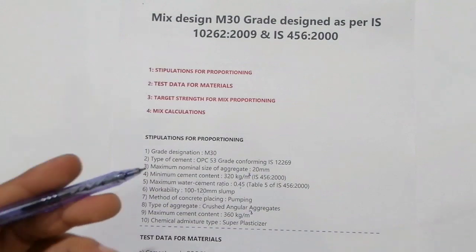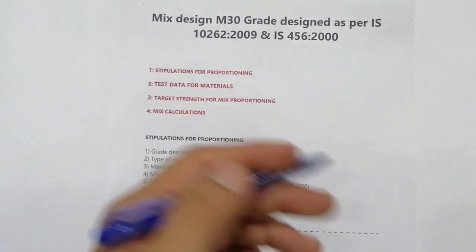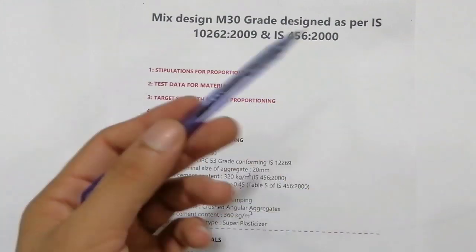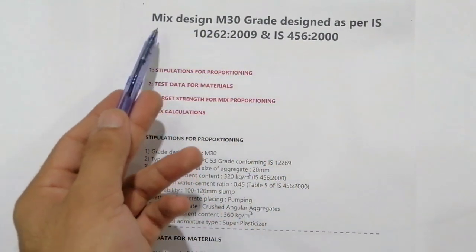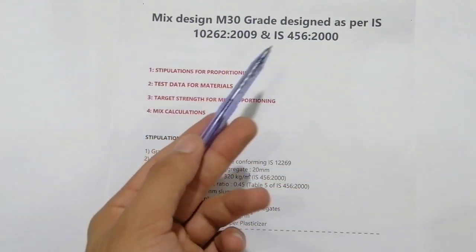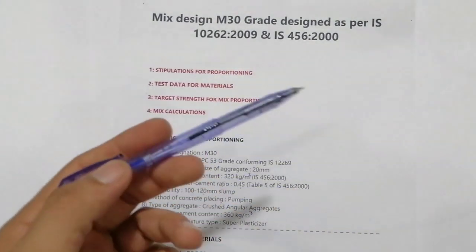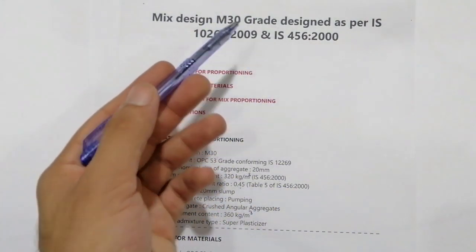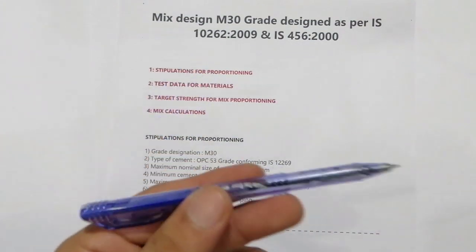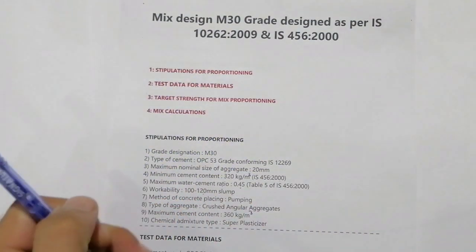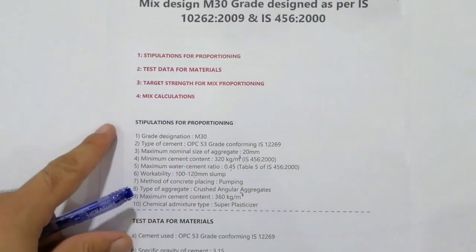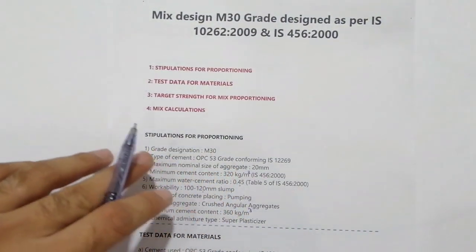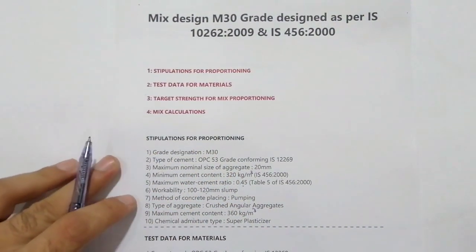This is a short introductory video, as this is not the full design for M30 grade. In the next video I will make a full lecture on mix design for M30 grade concrete from start to end. I will also try to cover M35, M40, M45, etc. These four steps — stipulations, test data for materials, mix proportion, and mix calculations — are very important. If you have any questions, please comment. Thanks for watching. See you in the next video. Goodbye.